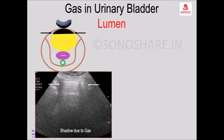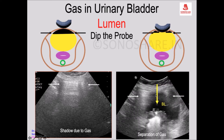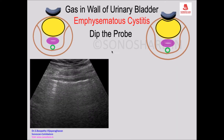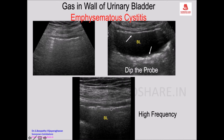A dirty shadow is seen, so this is the appearance. To confirm that there is gas within the lumen of the urinary bladder and not in the bowels or in the wall, the useful simple technique is to dip the probe. The shadowing from dipping causes the air to get separated, giving a fluid-filled gas appearance. When you dip the probe, if gas is in the lumen it will get displaced.